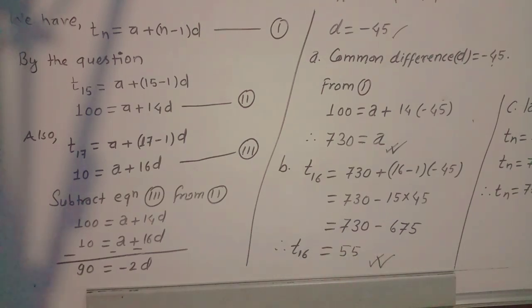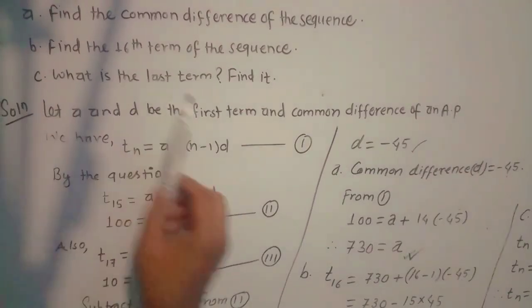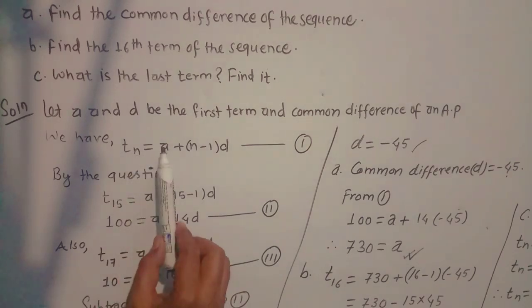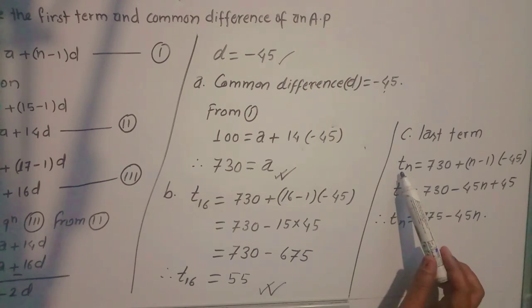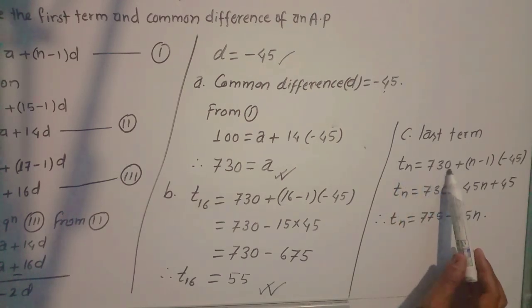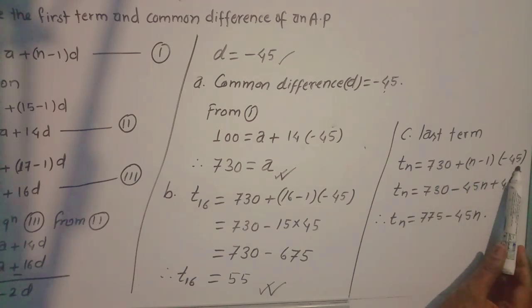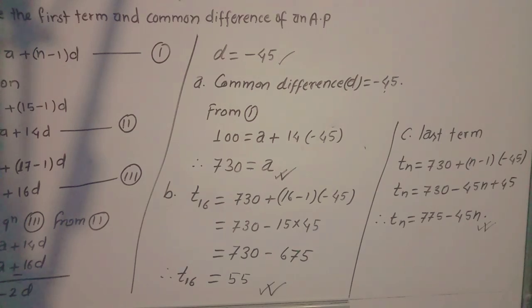Now find the last term. What is the last term? tn ko value find garnu parchha. tn, which is also called the last term or nth term: a ko value 730 plus (n-1) times d ko value minus 45. tn equals to 730 plus (n-1) times minus 45, which is 730 minus 45(n-1), or 730 minus 45n plus 45. This tn is the last term of this arithmetic progression. This is the final answer.